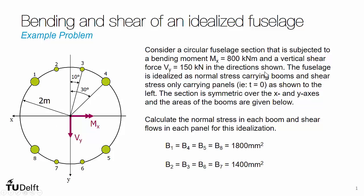The question also tells us that in the idealization of the four booms in the upper half and the four booms in the lower half, the thickness of the skin can be idealized as zero thickness. So it is a normal stress carrying boom and a shear stress only carrying panel idealization. The question then asks us to calculate the normal stresses in each boom and the shear flows in each panel.